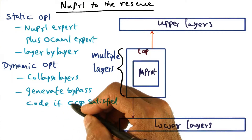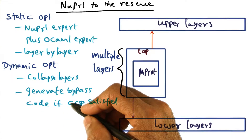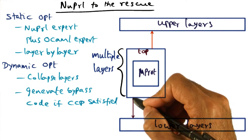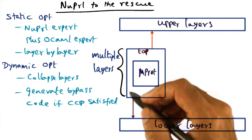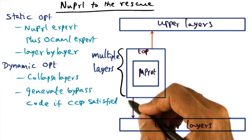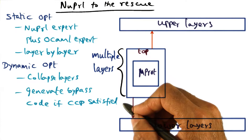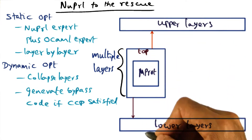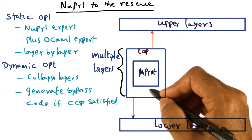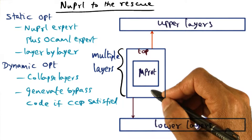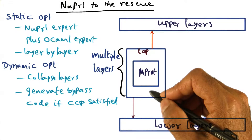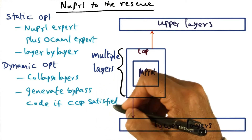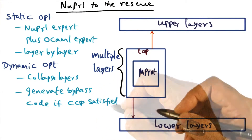The trick to this dynamic optimization is recognizing what the state of the protocol is at any point in time and how the protocol has to react to an input event — whether the event is coming from the top or from the bottom. How the protocol has to react to that event is the trick. And this is what is called the Common Case Predicate, CCP for short.